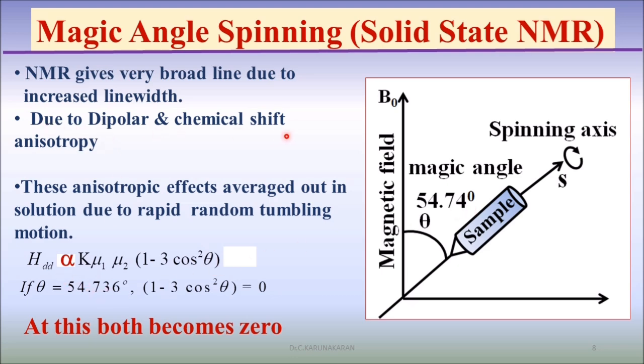The dipolar chemical shift anisotropy is directly proportional to 1 minus 3 cos squared theta. When theta equals 54.74 degrees, both these effects become zero.